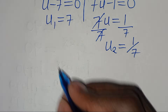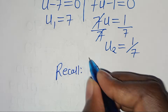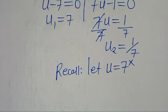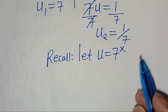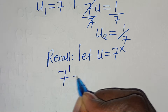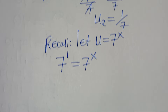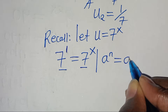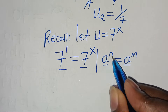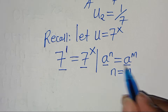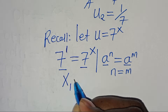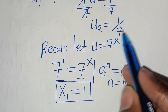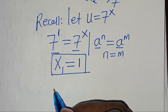Recalling that u equals 7 to the power of x, let's start with u₁ which is 7. So we have 7 to the power of 1 equals 7 to the power of x. Since the bases are the same, and applying the property that if a to the power of n equals a to the power of m then n equals m, we get x₁ is equal to 1.